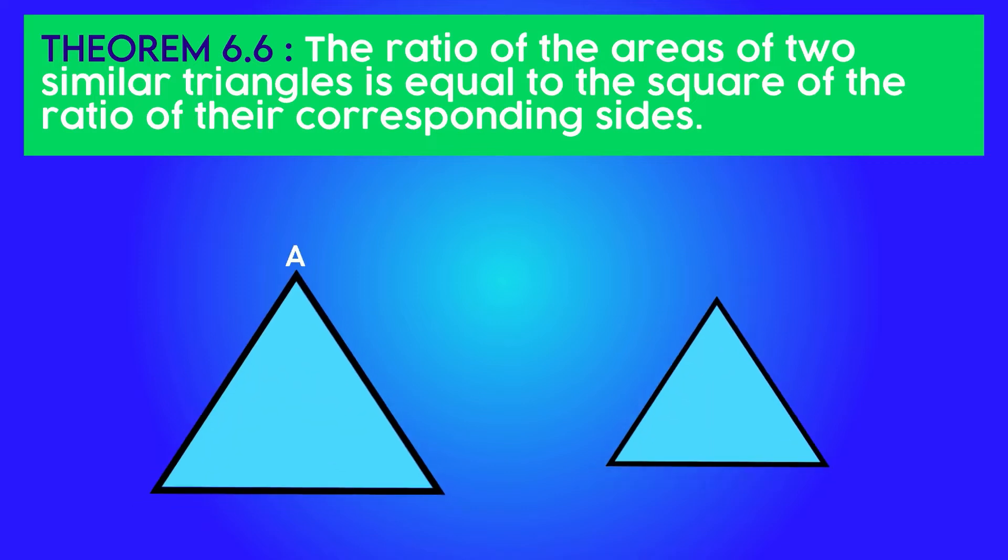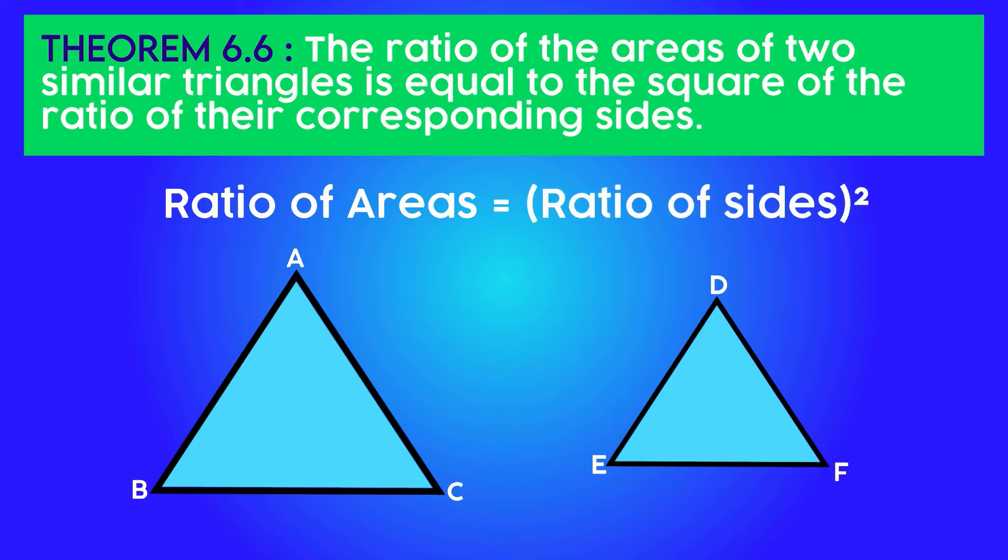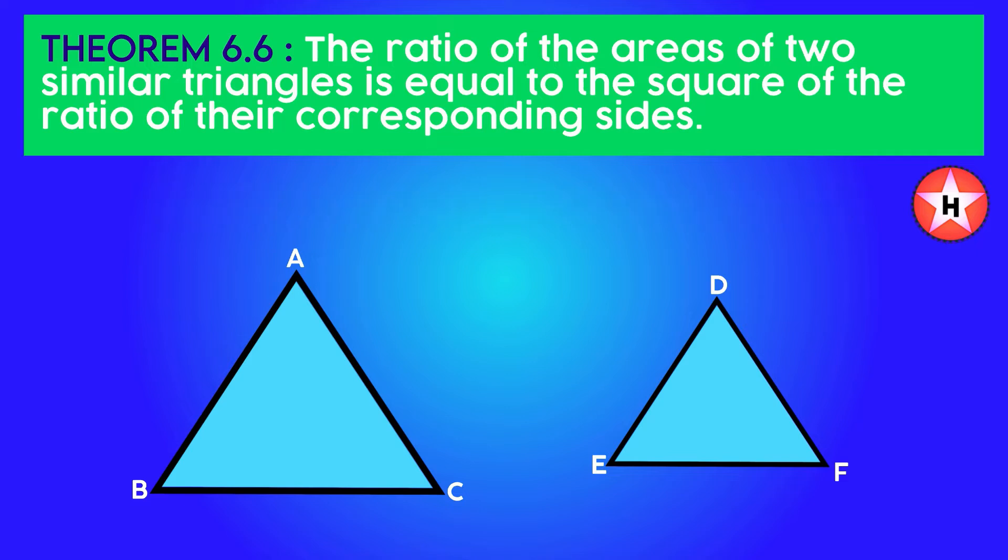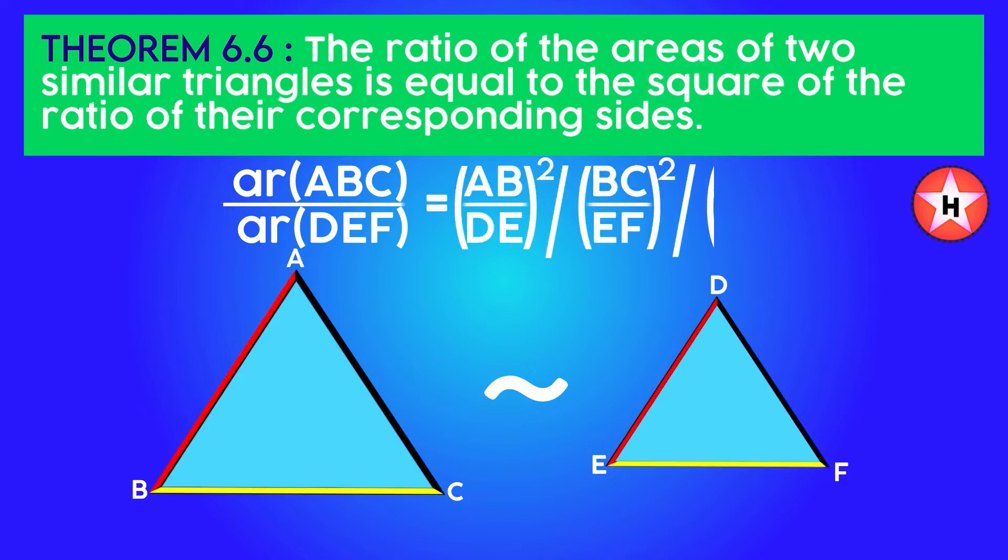Theorem 6.6: In two similar triangles, the ratio of their areas equals the square of the ratio of their sides. This is a hard theorem, so let me explain it clearly. If two triangles are similar, then the ratio of their areas equals the square of the ratio of any pair of corresponding sides.